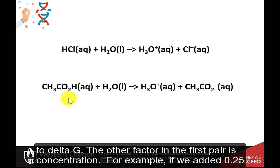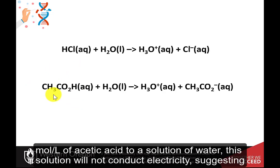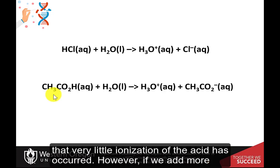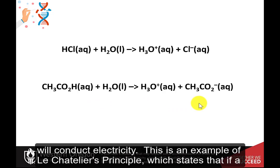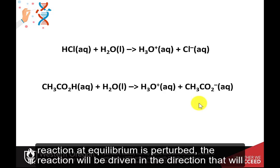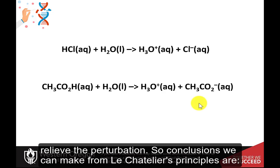The other factor in the first pair is concentration. For example, if we added 0.25 moles per liter of acetic acid to a solution of water, this solution will not conduct electricity, suggesting that very little ionization of the acid has occurred. However, if we add more concentrated acid to the solution, this will drive the formation of the product and the solution will conduct electricity. This is an example of Le Chatelier's principle, which states that if a reaction at equilibrium is perturbed, the reaction will be driven in the direction that will relieve the perturbation.